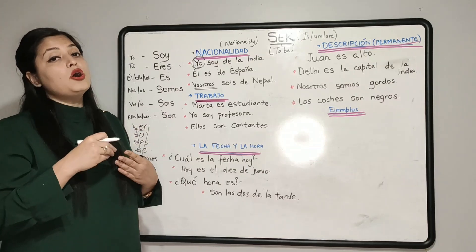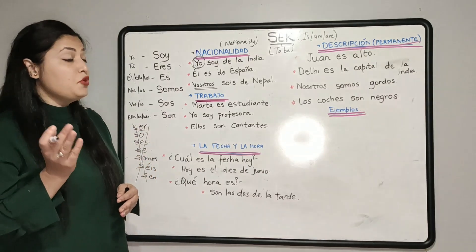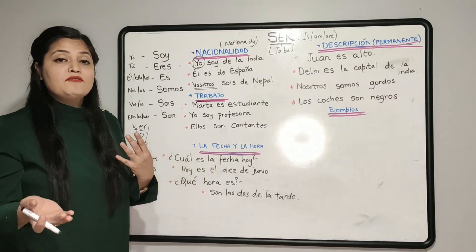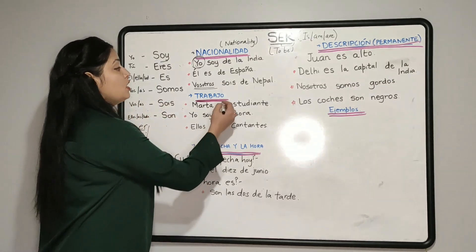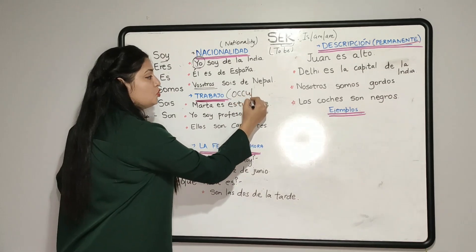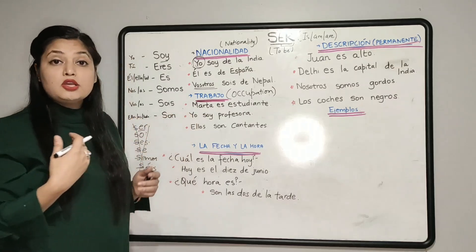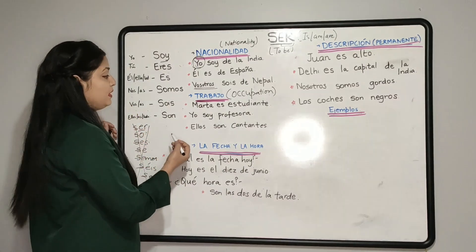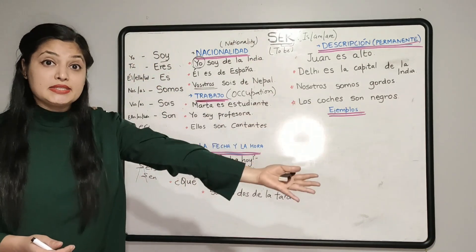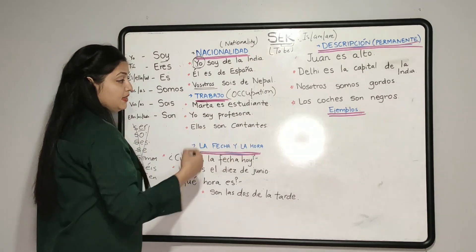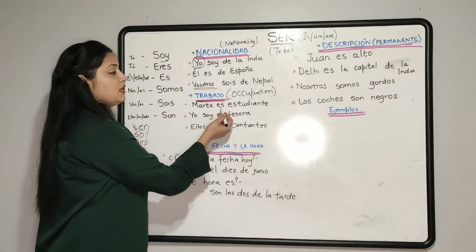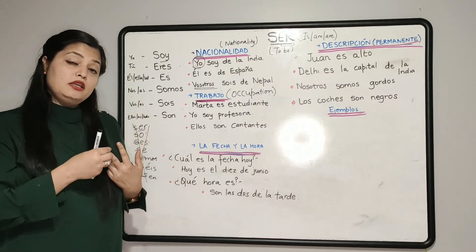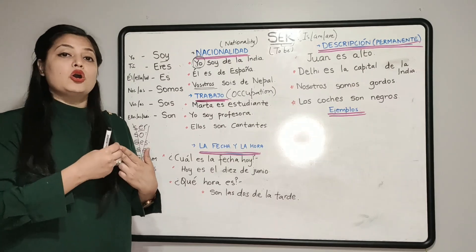Apart from nationality or origin, where else do we use the verb 'ser'? We also use the verb 'ser' to tell 'el trabajo' — trabajo means work, job, or occupation. So to tell the occupation or profession of a person, we also use the verb 'ser'. For example, if I want to say 'I am a teacher', it becomes 'yo soy profesora'. If I want to say 'they are singers', it becomes 'ellos son cantantes'. If I want to say 'Marta is a student', it becomes 'Marta es estudiante'. So we use 'ser' first for nationality, and second for occupation or profession.